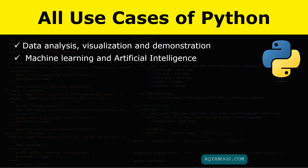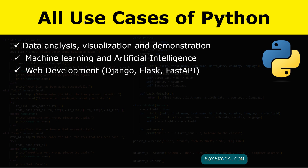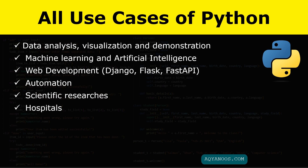Python is used for machine learning and artificial intelligence (AI). Python is used in web development — it has the Django library, Flask, and FastAPI library for web development. Python is also used in automation for automating boring, repetitive tasks.